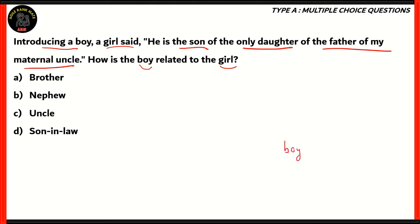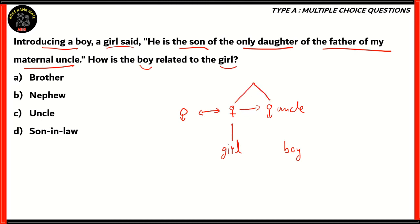We have two people — a boy and a girl. We know the girl has a maternal uncle, so a mother married to a husband. This lady has an uncle, and the question says 'father of my maternal uncle.' Therefore, this uncle and the mother are offspring of a father — which in this case is the grandfather to the girl.